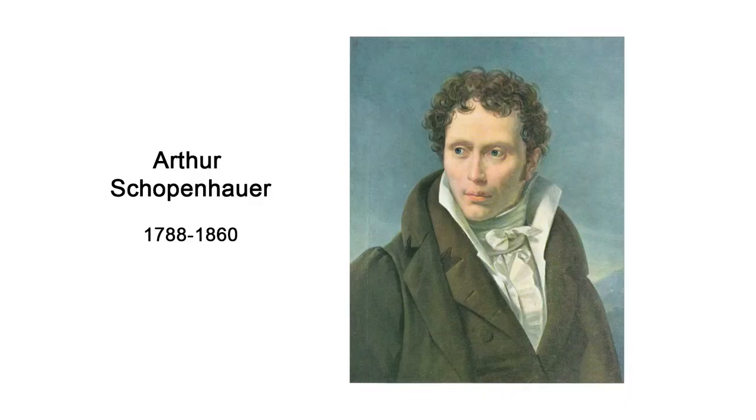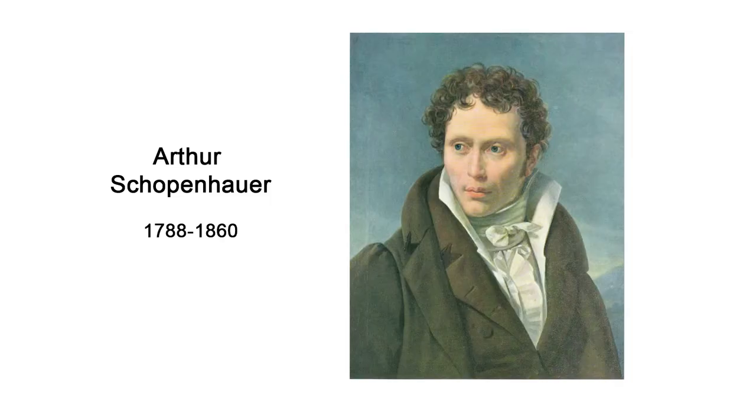Goethe had a student called Arthur Schopenhauer, whom he met at Schopenhauer's mother's salon. Schopenhauer learned a lot from Goethe, but their perception of colour diverged and they fell out. Schopenhauer wrote his own theory of colour called On Vision and Colours in 1816 — only six years after Goethe. He maintained that the eye was active, saying the eye's reaction to external stimulus is an activity, not a passive response — which connects very much with contemporary theories of perception.